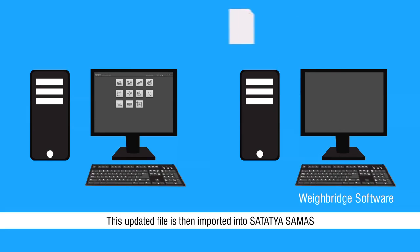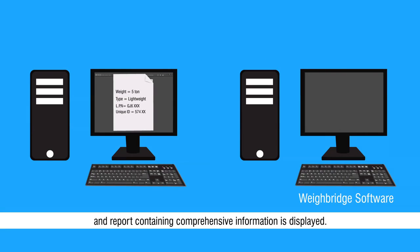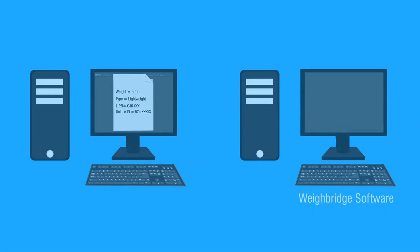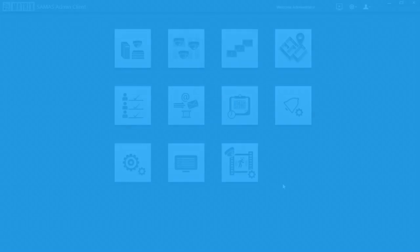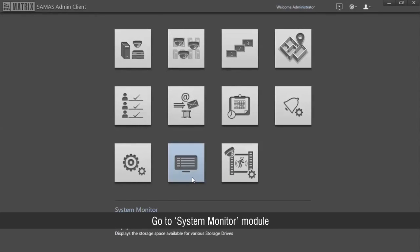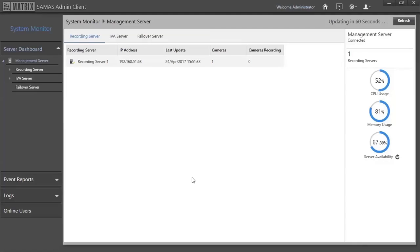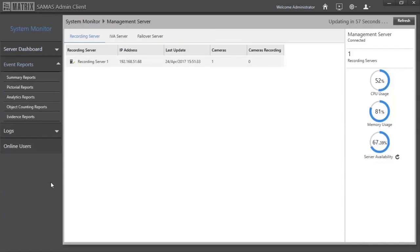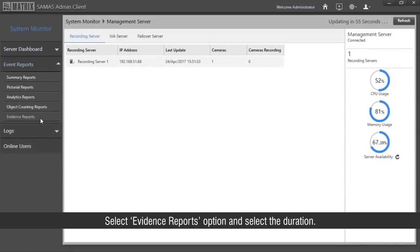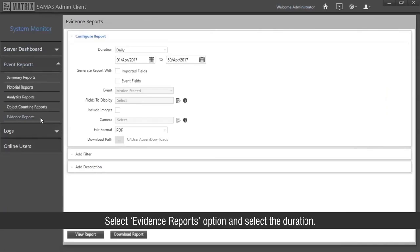This updated file is then imported into Satatyasamas and a report containing comprehensive information is displayed. Let us start with the fifth step of generating reports. Go to the System Monitor module followed by Event Reports. Select the evidence reports option and the selected duration.